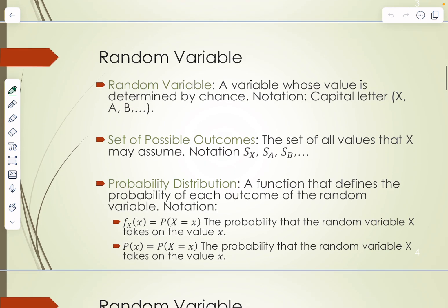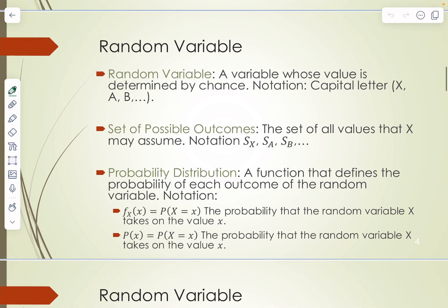So what is a random variable? A random variable is a variable whose value is determined by chance. Usually this is notated by a capital letter. The set of all possible outcomes that a random variable can attain is called the set of possible outcomes — the set of all values that X can assume. The notation is capital S with a subscript of the name of that random variable, so if it was X it's S subscript X.